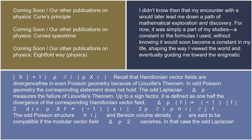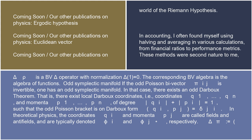Recall that Hamiltonian vector fields are divergence-free in even Poisson geometry because of Liouville's theorem. In odd Poisson geometry, the corresponding statement does not hold. The odd Laplacian delta_rho measures the failure of Liouville's theorem, up to a sign factor. It is defined as one-half the divergence of the corresponding Hamiltonian vector field: delta_rho(f) = (−1)^|f| / 2 · div_ρ(X_f) = (−1)^(|x^i|/2) ρ^{-1} del_i(ρ π^{ij} del_j f). The odd Poisson structure π^{ij} and Berezin volume density ρ are said to be compatible if the modular vector field delta_rho² vanishes. In that case, the odd Laplacian delta_rho is a BV delta operator with normalization delta(1) = 0, and the corresponding BV algebra is the algebra of functions.